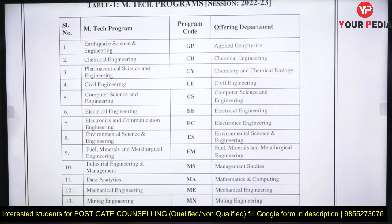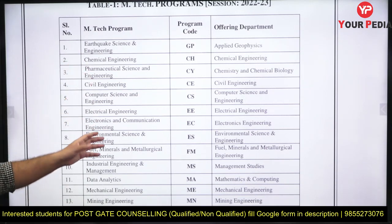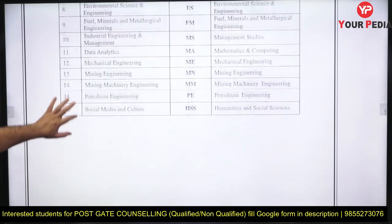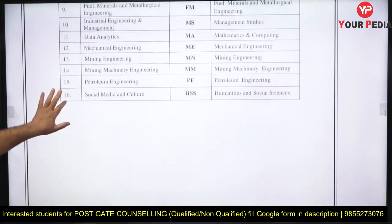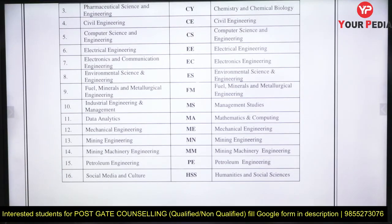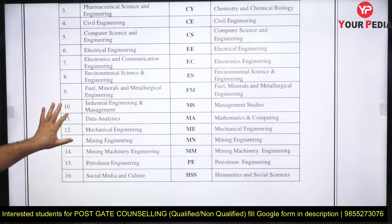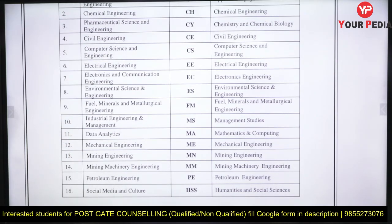You can apply in as many programs as possible — maximum 10 preferences overall. Choose a couple of programs, but one program will cost you 600 rupees. Under each program, you can give your preferences. As a mechanical engineer, for example, you might want to apply in Industrial Engineering and Management, Data Analytics, and Mechanical Engineering — suppose you choose these three.